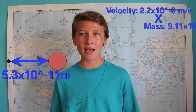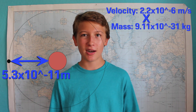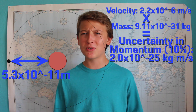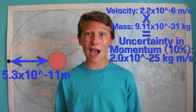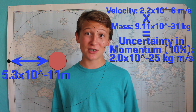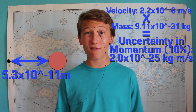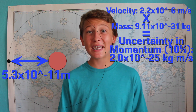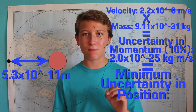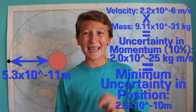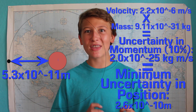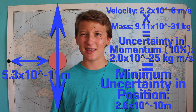In addition to the radius, we also know the velocity and mass — or the momentum — of the electron, and thus its uncertainty in momentum. Since we know its uncertainty in momentum, we can calculate its uncertainty in position. If we plug in the momentum of the atom with a 10% uncertainty, we get a minimum uncertainty in position of 2.6 times 10 to the negative 10, which is more than double the radius of the electron.